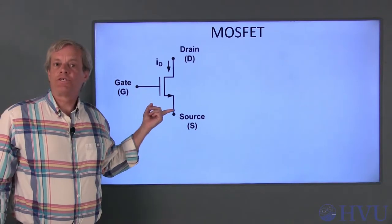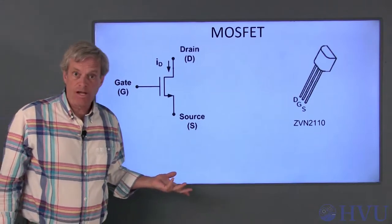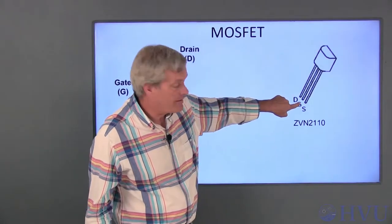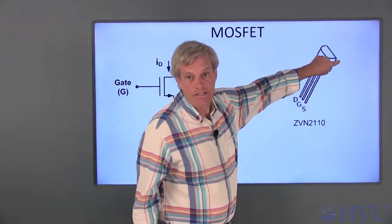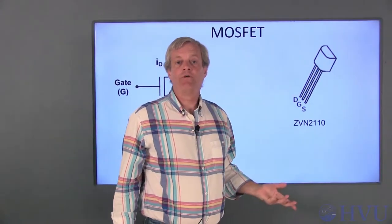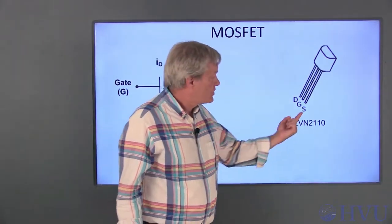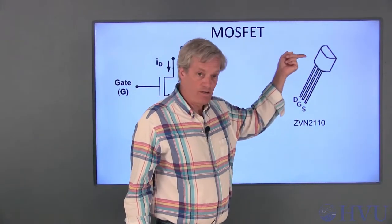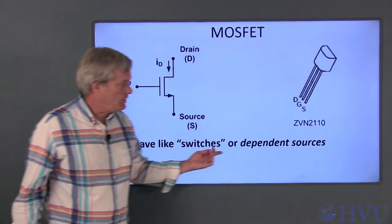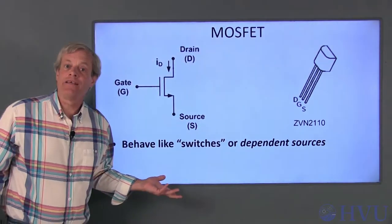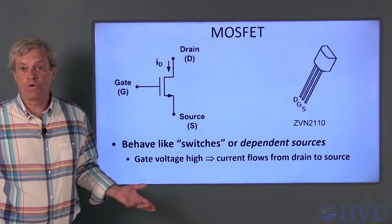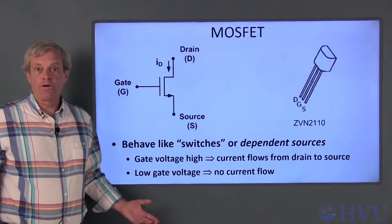The arrow tells us which terminal is the source. The specific MOSFET we'll use is the ZVN2110. It has three wires corresponding to the drain, the gate, and the source. One side of the transistor is curved — the curvature allows us to identify which terminal is the drain and which is the source. The source is on the right-hand side if you're facing the curved surface of the FET. FETs behave like switches — in more official terms, they're called dependent sources. In our circuit, they act as a current source that depends on the gate voltage. If the gate voltage is high, current leaves the source; if the gate voltage is low, no current leaves the source.